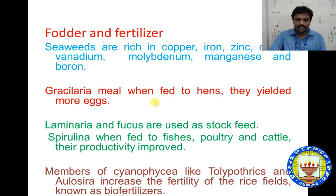Members of Cyanophyceae like Tolypothrix and Aulosira increase the fertility of rice fields and are known as bio-fertilizers. Bio-fertilizers provide macronutrients — nitrogen, phosphorus, potassium, and carbon — and micronutrients such as zinc, boron, sulfur, magnesium, and manganese. Because of these properties, algae members are used as good bio-fertilizers and also for sewage treatment.